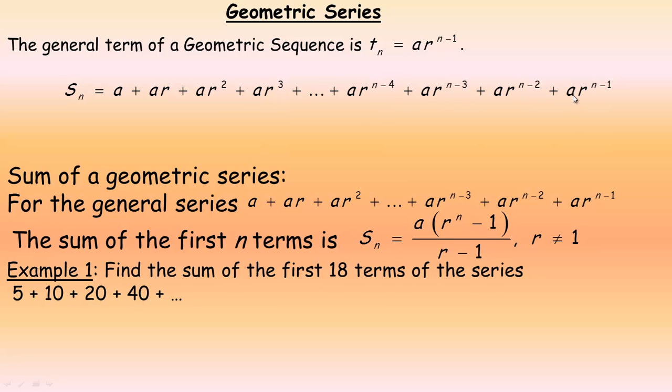Now the nth term would be this a r to the n minus 1. The term before it would be a r to the n minus 2. If you divided this by r you would get, you're really subtracting one from the exponent, that's why it would be n minus 2 and then n minus 3 for the one before that and n minus 4 for the one before that.